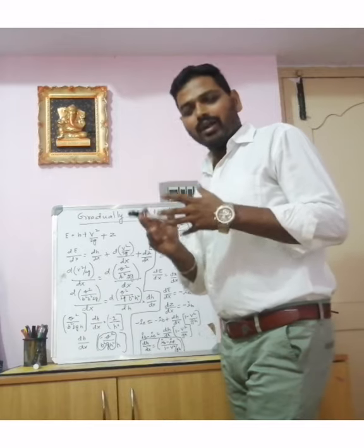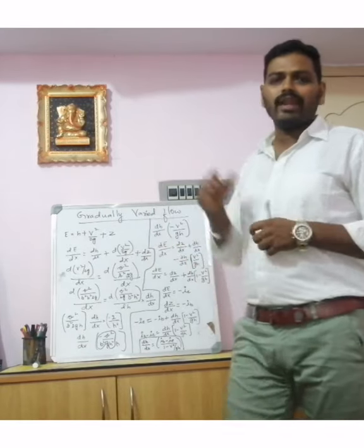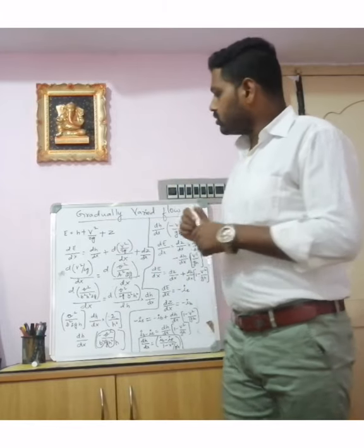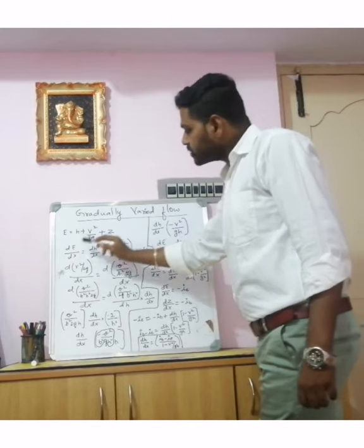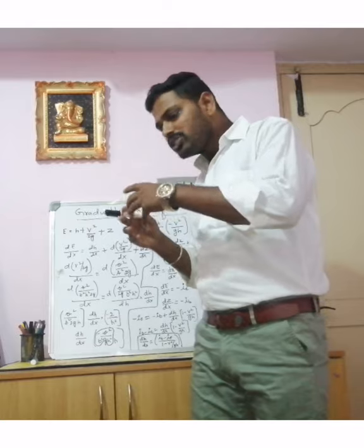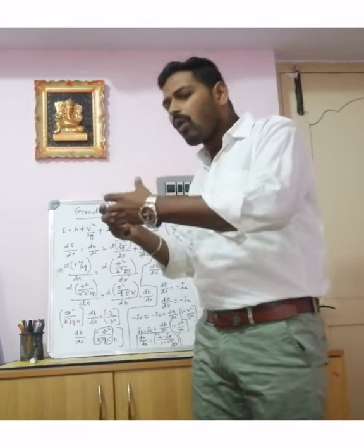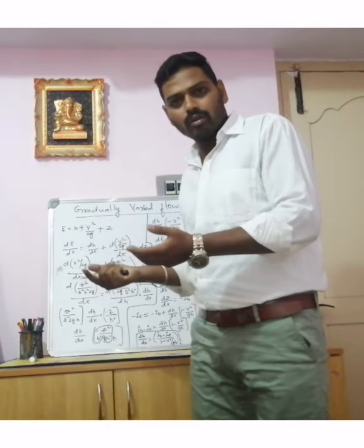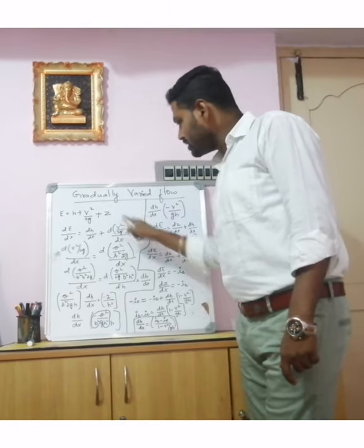The total energy line is the sum of pressure head, velocity head, and datum head. To find the equation for gradually varied flow, we differentiate the energy equation with respect to x, since x is the unknown distance over which changes occur. Differentiating: dE/dx = dH/dx + d(v²/2g)/dx + dz/dx.